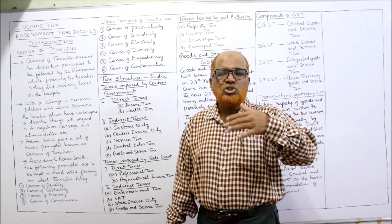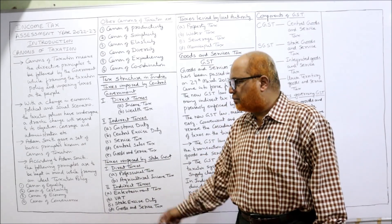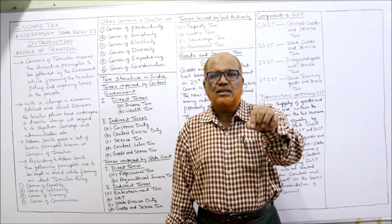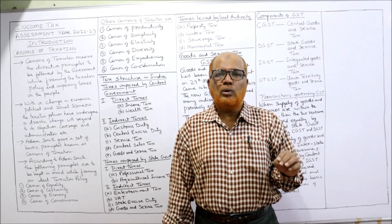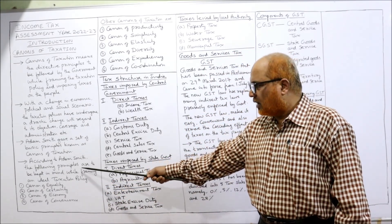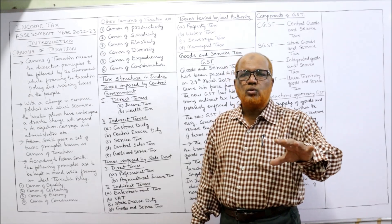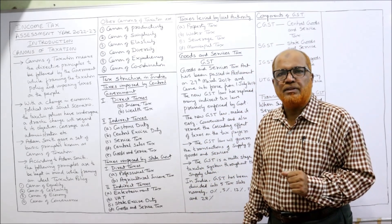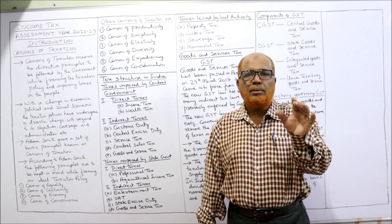According to the changed conditions, the government has to change its policies. Adam Smith gave a set of basic principles called canons of taxation. These canons should be applied whenever a taxation policy is implemented — not only in India but throughout the world. According to Adam Smith, the following principles are to be kept in mind while framing an ideal taxation policy: whichever government wants to make a taxation policy, they have to follow these canons.